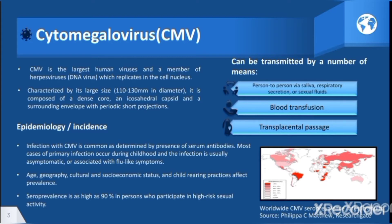CMV can be transmitted by a number of means such as person-to-person contact, blood transmission, and transplacental passage. Infection with CMV is common as determined by the presence of serum antibodies. Age, geography, cultural and socio-economic status, and child-rearing practices affect the prevalence. Cytomegalovirus prevalence is as high as 90% in persons who participate in high-risk sexual activities.